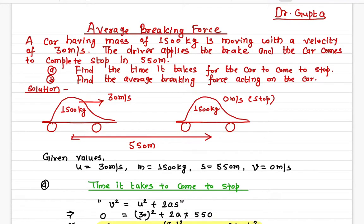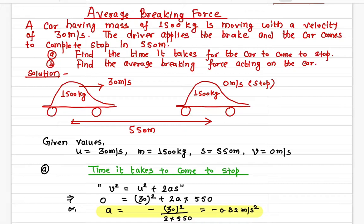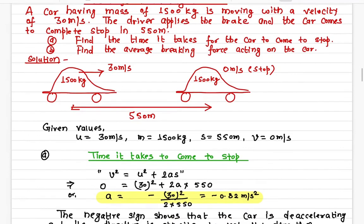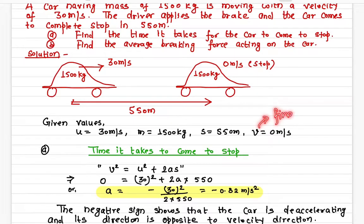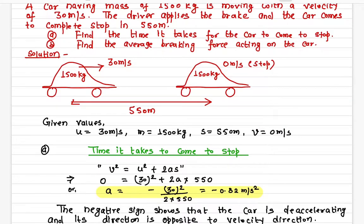Let's write down all the given values. The initial velocity u is 30 meters per second. The mass of the car is 1500 kilograms. The distance s is 550 meters. And the final velocity v is zero, because the car has come to a complete stop.